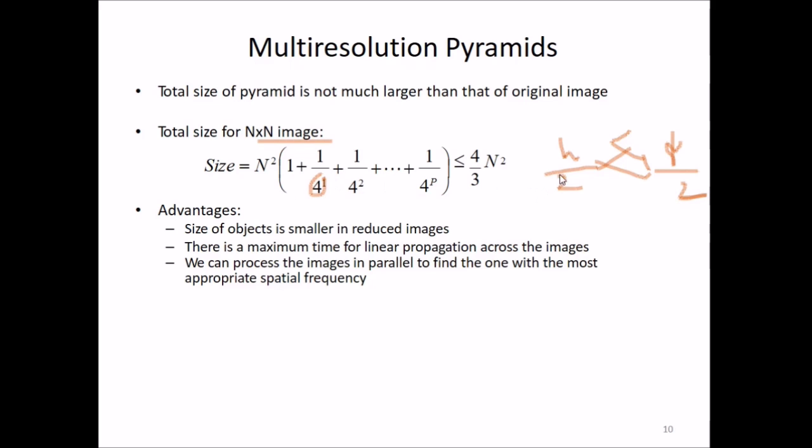Just adding one-third of the space, we can store all these pyramids. This is the multi-resolution pyramid structure and how it's formed. The advantages are: the size of objects is smaller in reduced images, there's maximum time for linear propagation across images, and we can process images in parallel to find the one with the most appropriate spatial frequency.